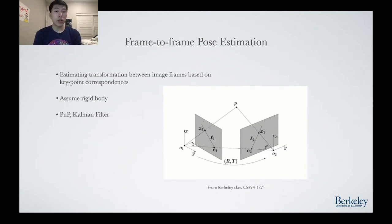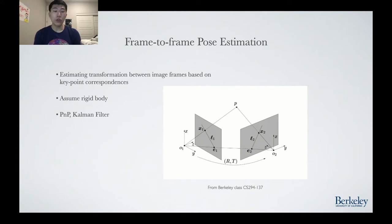Another way to solve this frame-to-frame pose estimation problem is with an extended Kalman filter. By maintaining a state vector with all current observations and landmarks, the extended Kalman filter can be used to estimate the current position of the camera and minimize error.